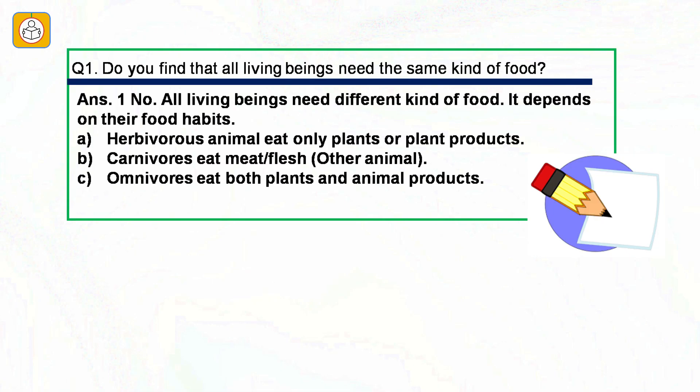Question number one: Do you find that all living beings need the same kind of food? The answer is no. All living beings need different kinds of food depending on their food habits. Herbivorous animals eat plants or plant products. Carnivorous animals eat only animal products. Omnivorous animals can eat both plant as well as animal products.